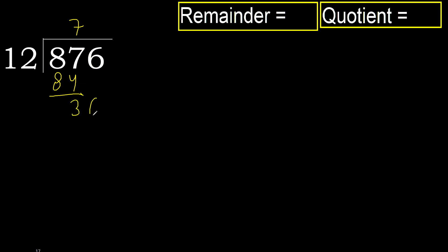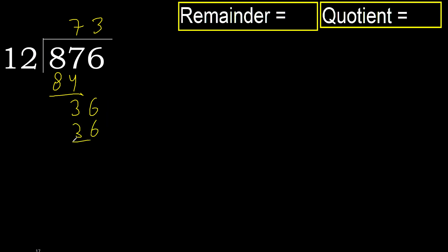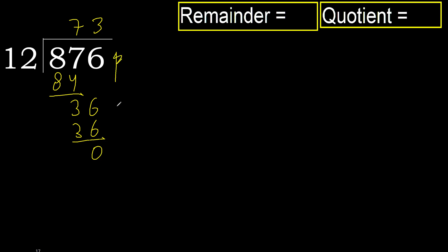Next, bring down 36. 12 multiplied by 3 is 36, which is not greater. Subtract. Next, there is no number, therefore finish.